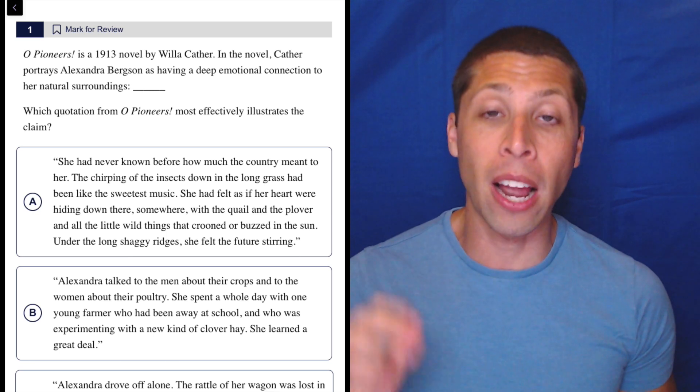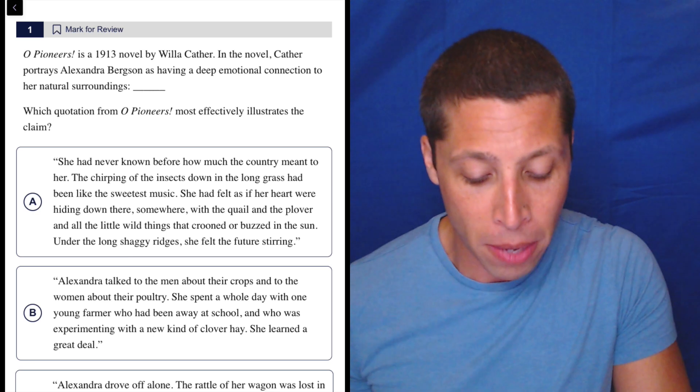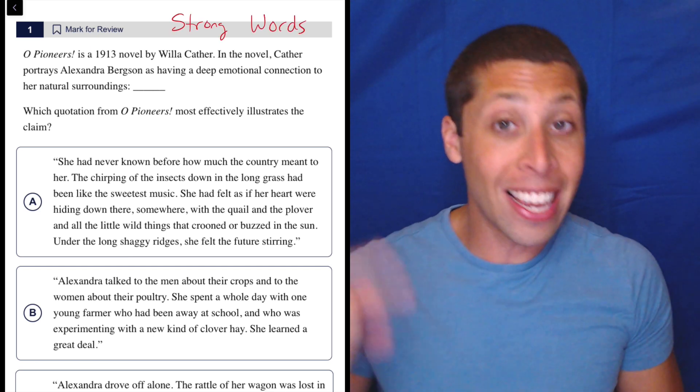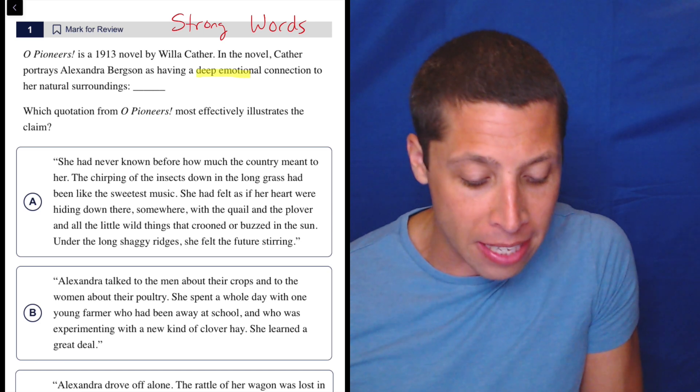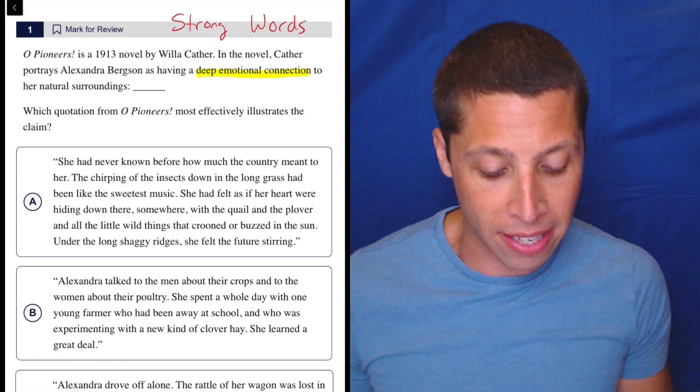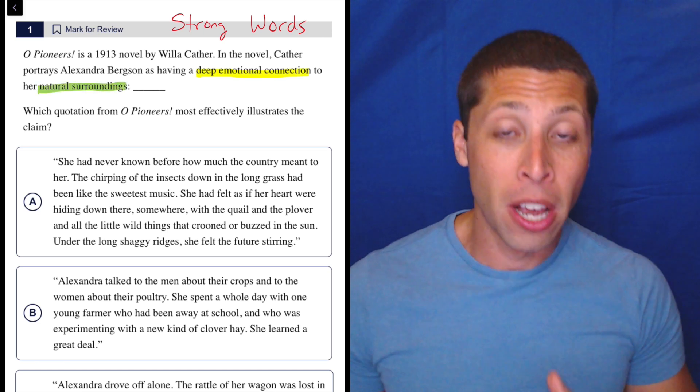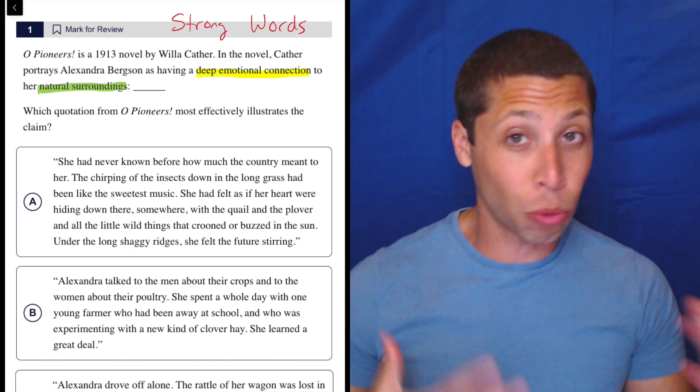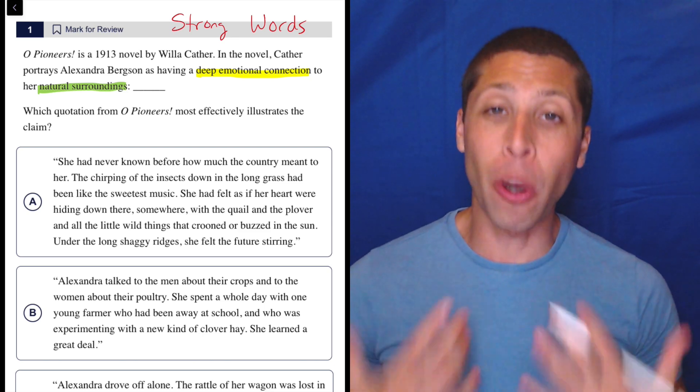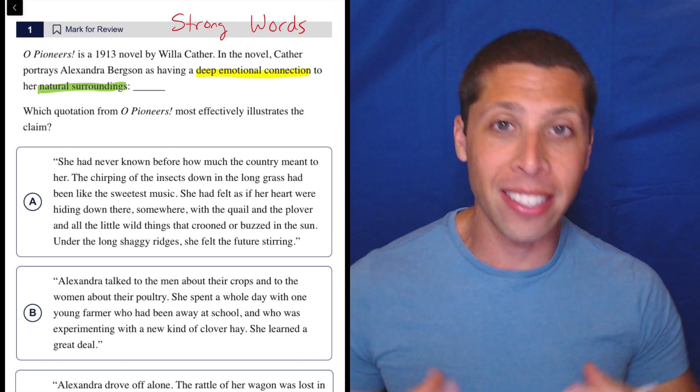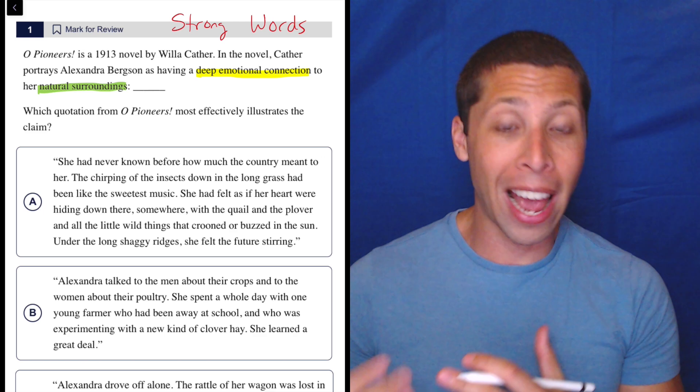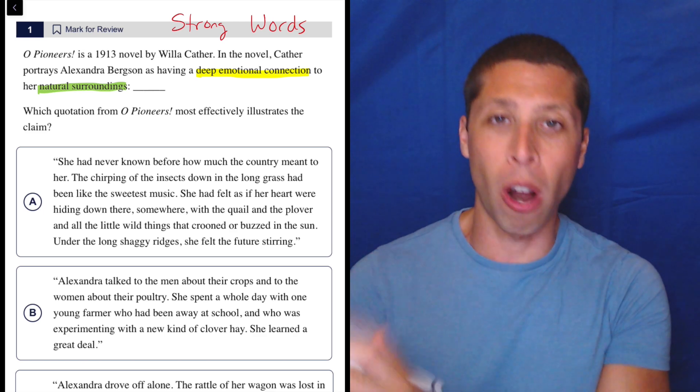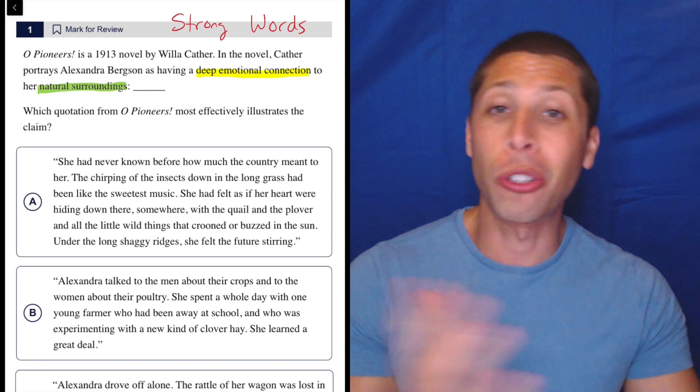There are really two claims here, and I want to make sure that I match with both of them. So what I'm thinking about or noticing are the strong words in the claim. Specifically, I see a deep emotional connection and the other is about the natural surroundings. What I really want is that my answer choice will also have the same strong words. It's not going to be the exact same things, but it's going to be synonyms, related ideas that orbit those same ideas. We're just looking to match the strong words in the passage to the strong words in the choices.